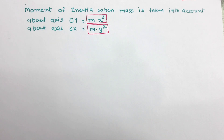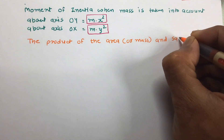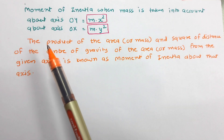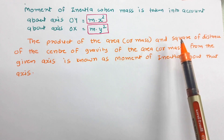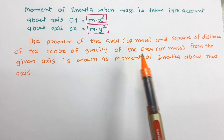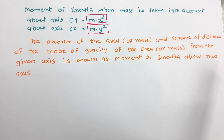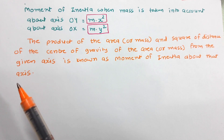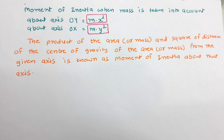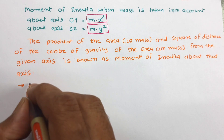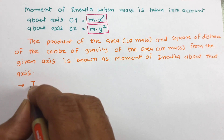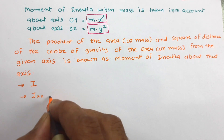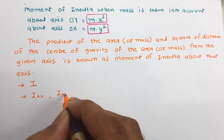Now let us write the definition of moment of inertia. The product of area (or mass) and the square of the distance of the center of gravity of that area or mass from the given axis is known as the moment of inertia about that axis. Moment of inertia is always determined about some reference axis and is denoted by the symbol I. If determined about the XX axis it is called Ixx, and if determined about the YY axis it is called Iyy.